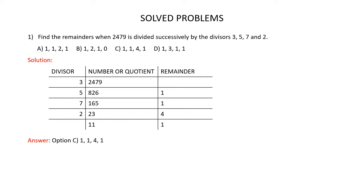Question 1: Find the remainders when 2479 is divided successively by the divisors 3, 5, 7 and 2. You are given 4 answer options and you have to find out which of these answer options is the correct one.